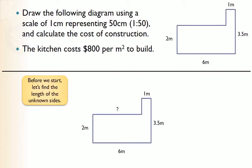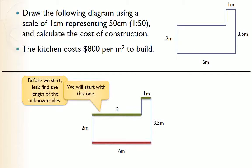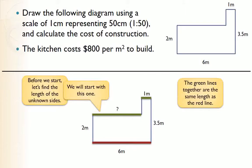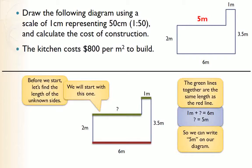The first thing we need to do is find the lengths of the unknown sides. The one at the top is not given in the question, so we need to find it. We can recognize that this total length is the same as the sum of two parts: one meter plus the unknown length equals six. So the unknown length has to be five, because five plus one makes six. We can write five meters on our diagram.